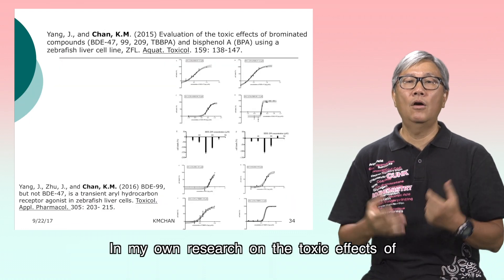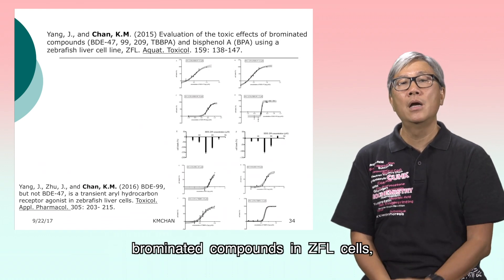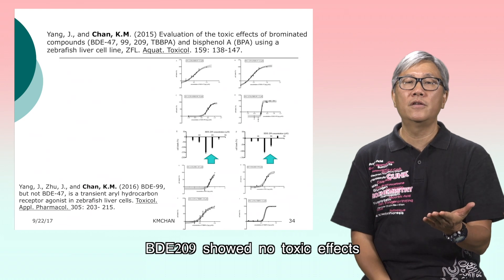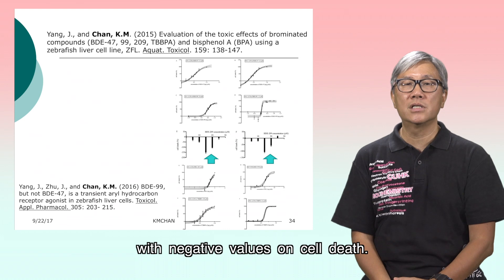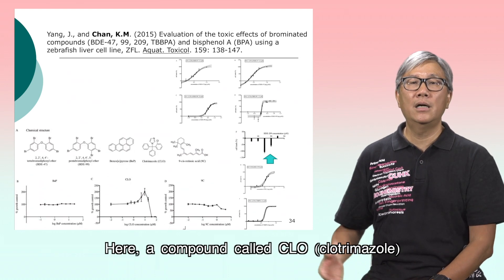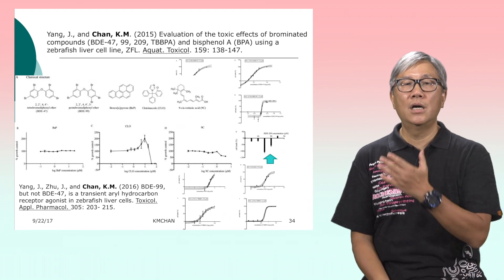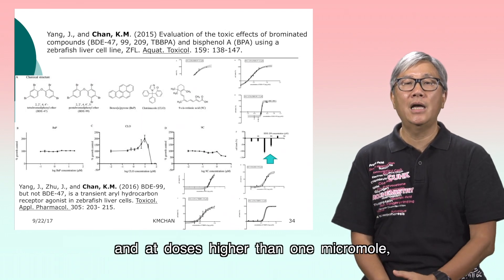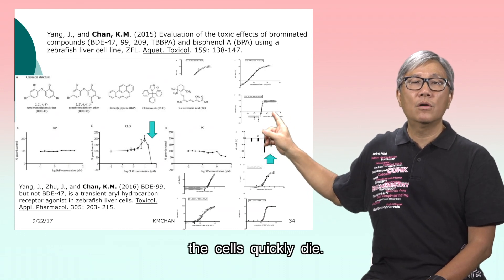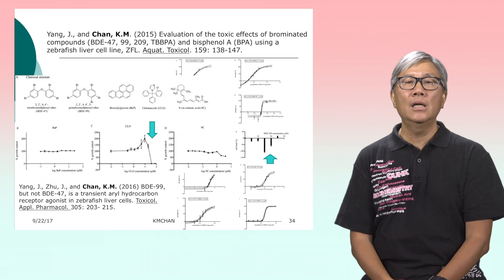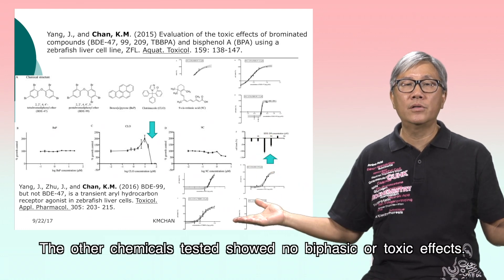In my own research on the toxic effects of brominated compounds in CHEL-L cells, BDE-209 showed no toxic effects — only growth stimulation with negative values on cell death. A compound called clotrimazole shows biphasic effects, and at doses higher than 1 micromolar, the cells quickly die. The other chemicals tested showed no biphasic or toxic effects.